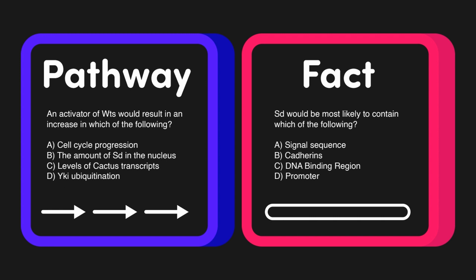This is in contrast to the fact-based question, which says SD would be most likely to contain which of the following, a signal sequence, adherens, DNA binding region, or a promoter. For the fact-based question, we only need to pinpoint a specific piece of information. We don't need to chart everything out because we're not describing the relationships. Realistically, all we need to know is what the heck is SD, and as a result of that, what would it contain?